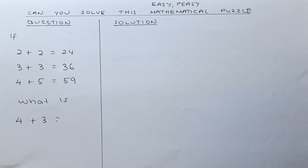2 plus 2 is 24, 3 plus 3 is 36, 4 plus 5 is 59, so what is 4 plus 3?